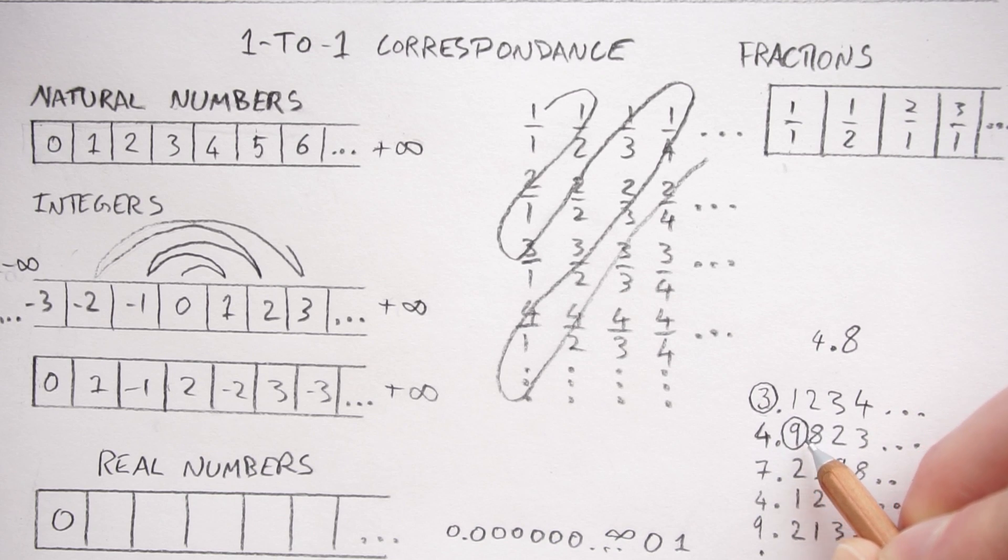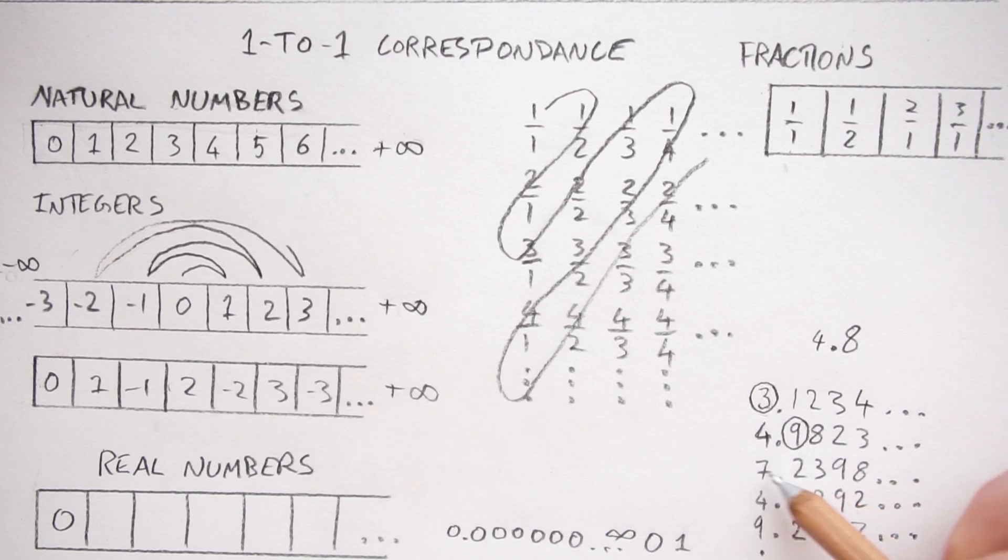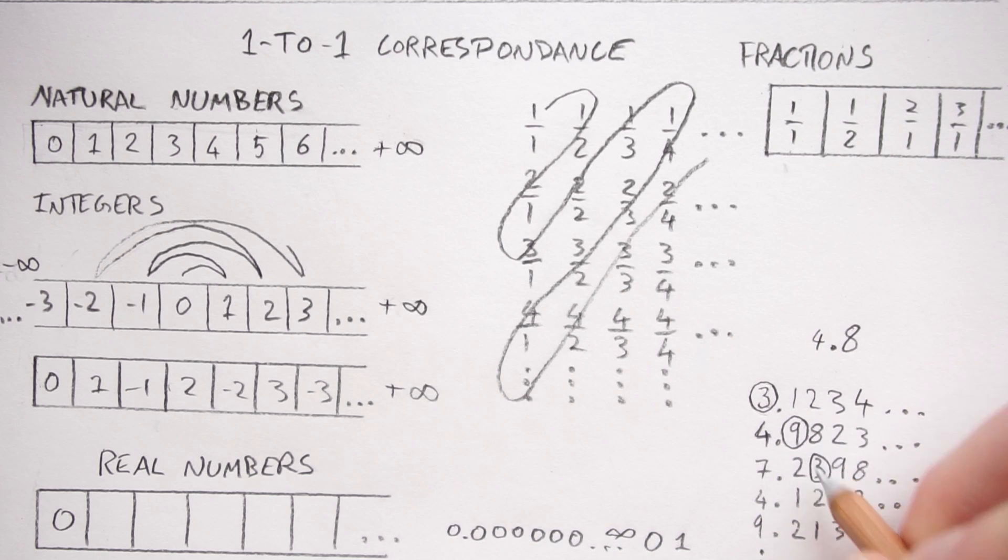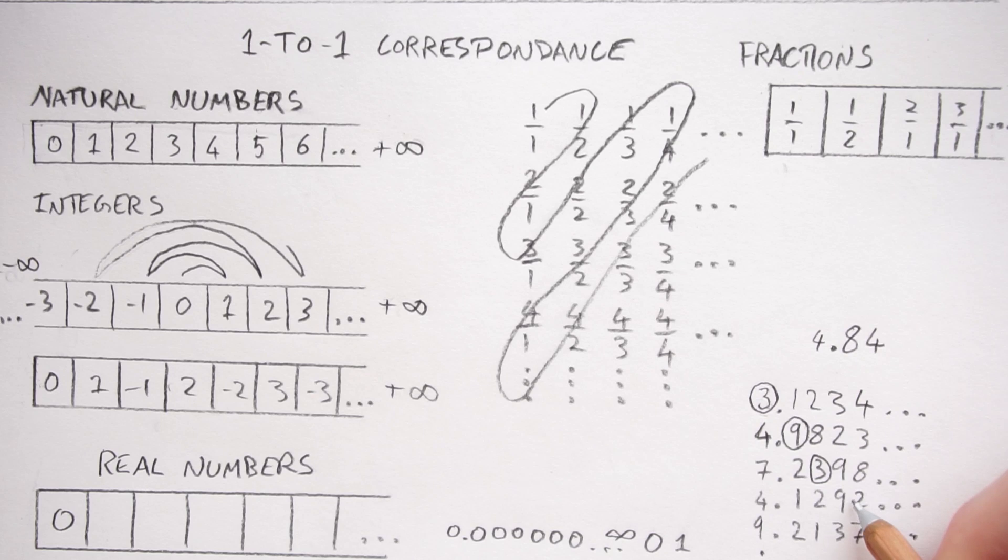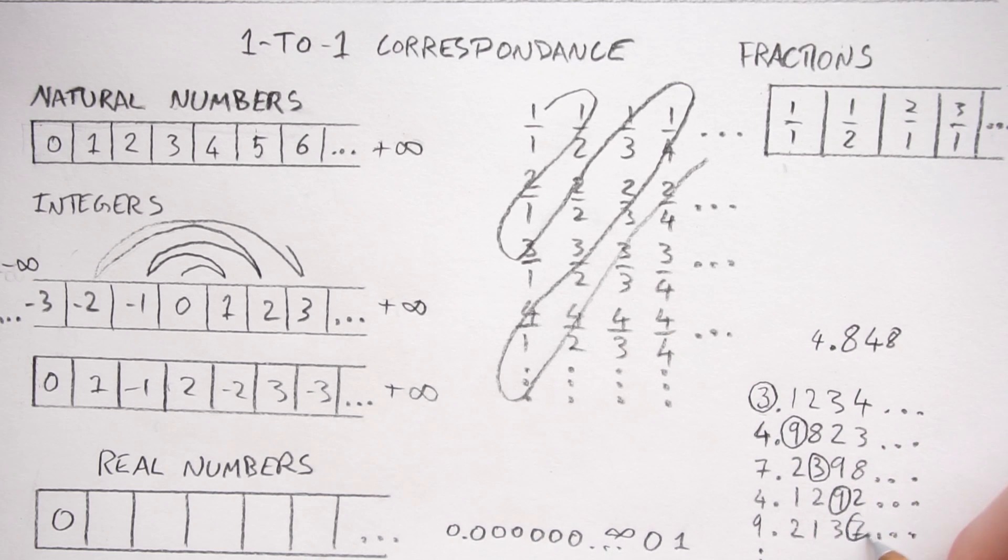Now we know that this number will be different to the first number on his list and the second number on his list. Now we can go on to the third number on the list and pick the third digit and change that. You can add 1 plus 1 plus 3, it doesn't matter, it just needs to be different from this number. And then you can carry on going.